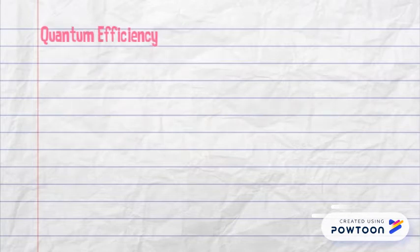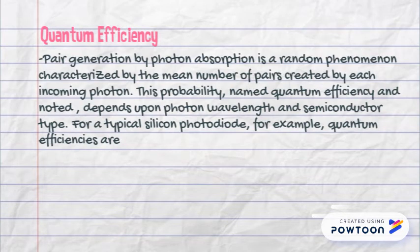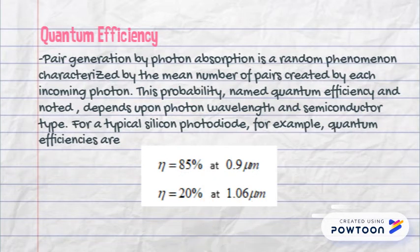Quantum efficiency: pair generation by photon absorption is a random phenomenon characterized by the mean number of pairs created by each incoming photon. It is named as quantum efficiency, and depends upon photon wavelength and semiconductor type. For a typical silicon photodiode, for example, quantum efficiencies are...